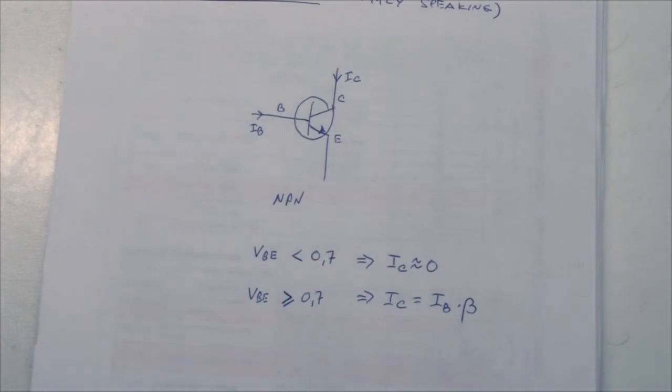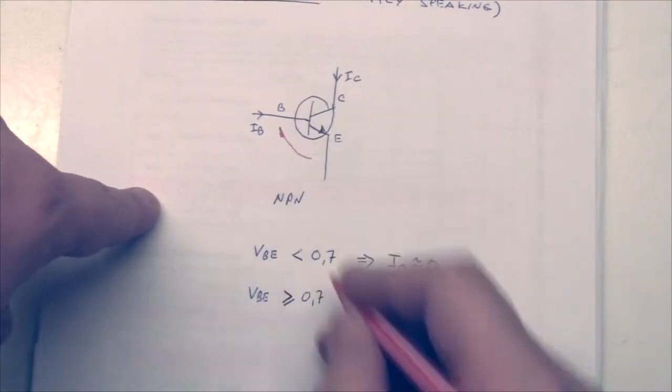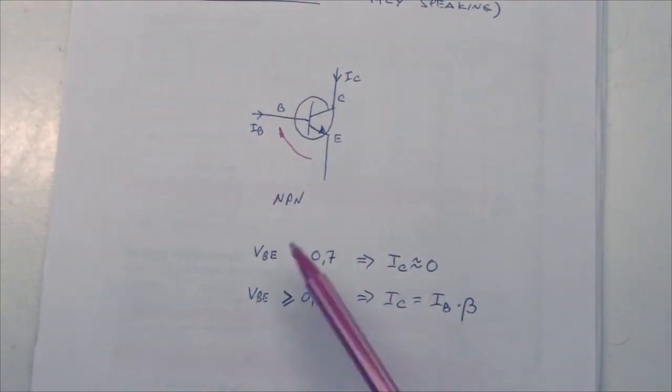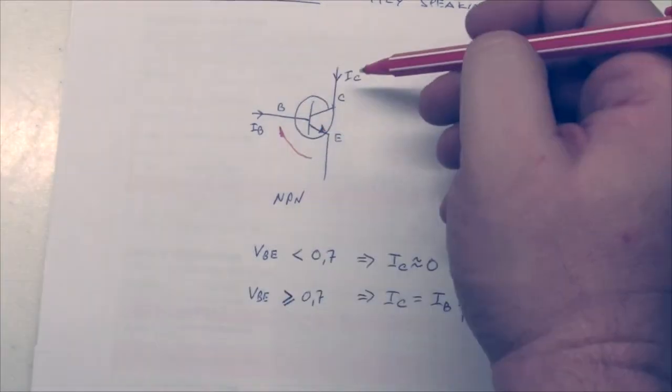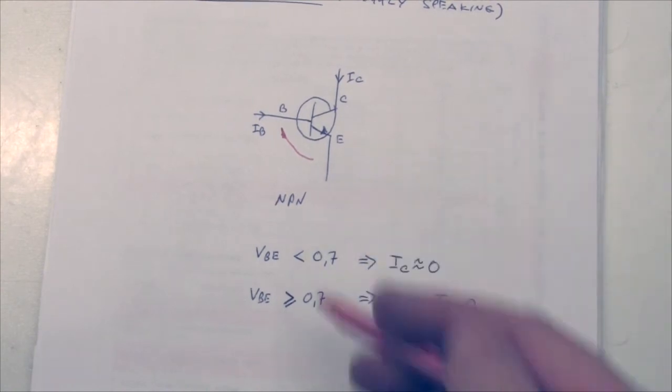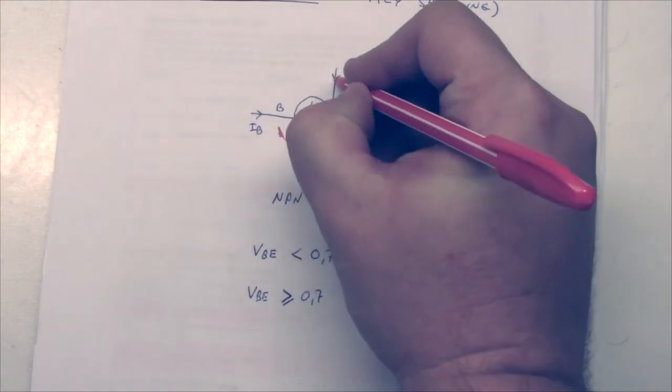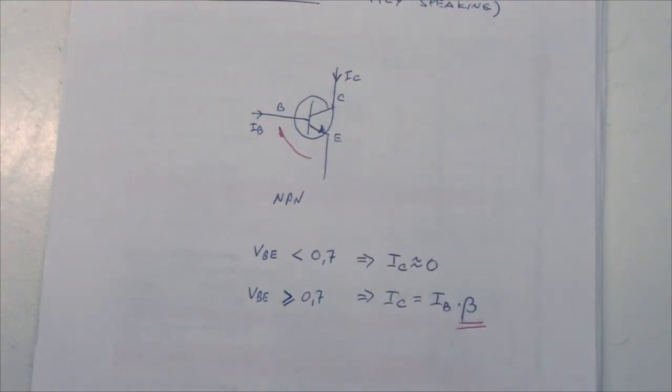Now, luckily the transistor has been invented, and for power supply design it basically operates in two modes. Either when the voltage across the VBE junction is less than 0.7 volts, in that case there will not be any current flowing through here. And in the other case, when VBE is greater than or equal to about 0.7 volts, the current flowing through here will be beta times IB. So we have a gain here of beta, and that is the whole idea about the transistor.